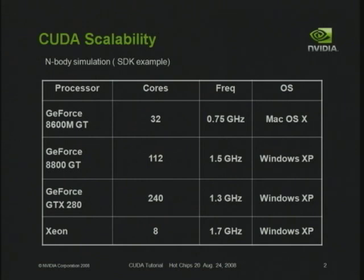We're going to show some applications on different GPUs and also on multicore. We'll start on a laptop with a GPU of only 32 cores at 0.75 GHz running Mac OS X. Then we'll move to a PC running Windows XP with both an 8800 GT (a G92 with 112 processors) and a new GTX 280 with 240 cores. We'll also show CUDA on multicore running on 8 processors on the same box. We also support Linux and Windows Vista.